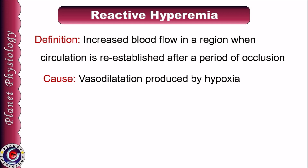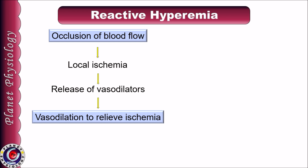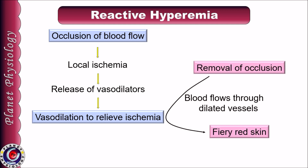Reactive hyperemia is caused by hypoxia-induced vasodilation. When blood flow to a region is occluded, it causes localized ischemia leading to hypoxia. Hypoxic tissues release various vasodilators, causing vasodilation to relieve tissue ischemia. When occlusion is removed, blood flows through these dilated vessels, resulting in blood flow much greater than normal, and the skin appears very red.